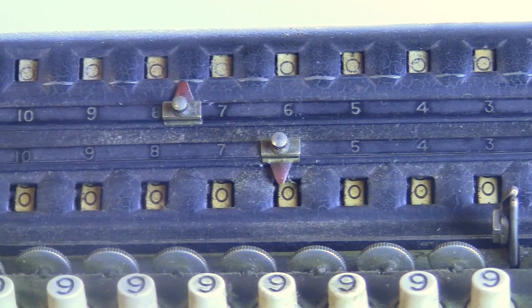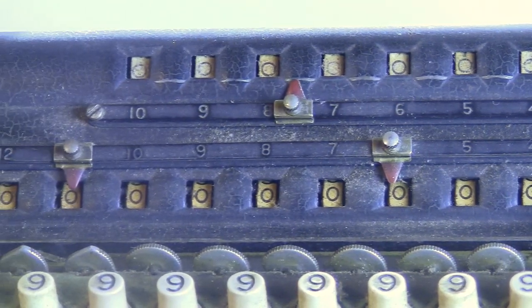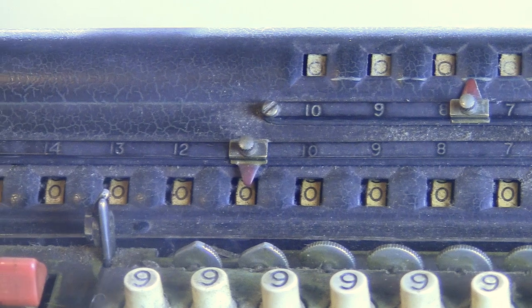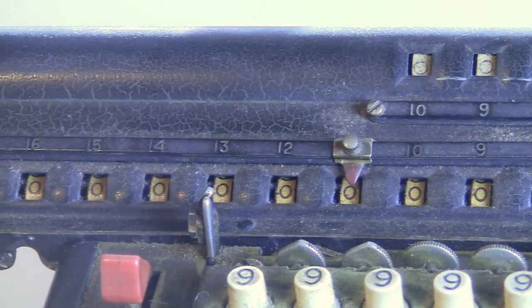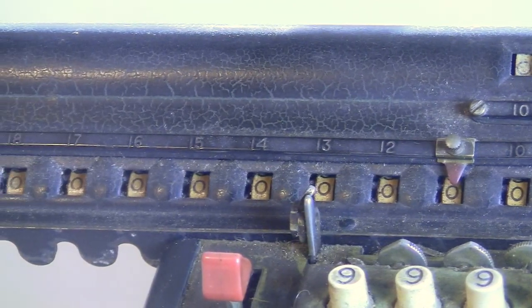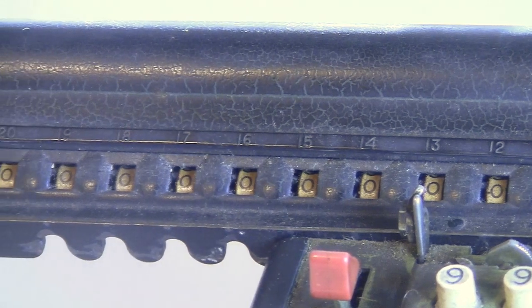These old machines are full of precision gears and springs, so they can get jammed pretty easily. When you add in an electric motor to the mix, that only increases the number of points where it could break. But this little guy is working perfectly.